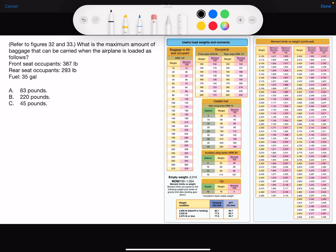Here we have a weight and balance problem. Refer to figures 32 and 33. What is the maximum amount of baggage that can be carried when the airplane is loaded as follows: They give us front and rear seat occupants and fuel quantity.